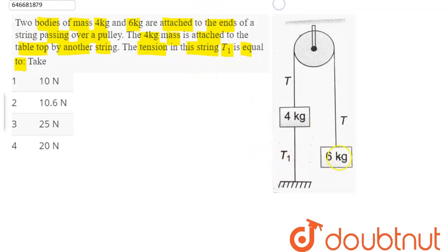We can say this whole system is in equilibrium which implies the forces acting on this block are T upwards and its weight 60 downwards.